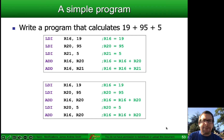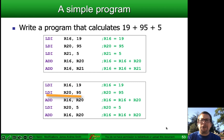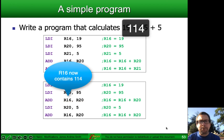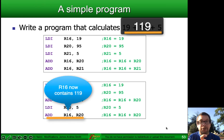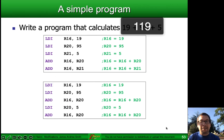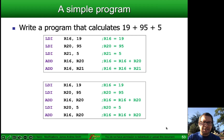Here's another way to do it: load the first two values — LDI r16, 19 and LDI r20, 95 — then do ADD r16, r20, which puts 114 in r16. Then load 5 into r20 with LDI r20, 5, and add: ADD r16, r20, which adds 5 to 114 giving 119 stored in r16. Note: when we say r16 and 19, we're not adding 16 and 19 together — we're adding the value 19 to the contents of register r16.